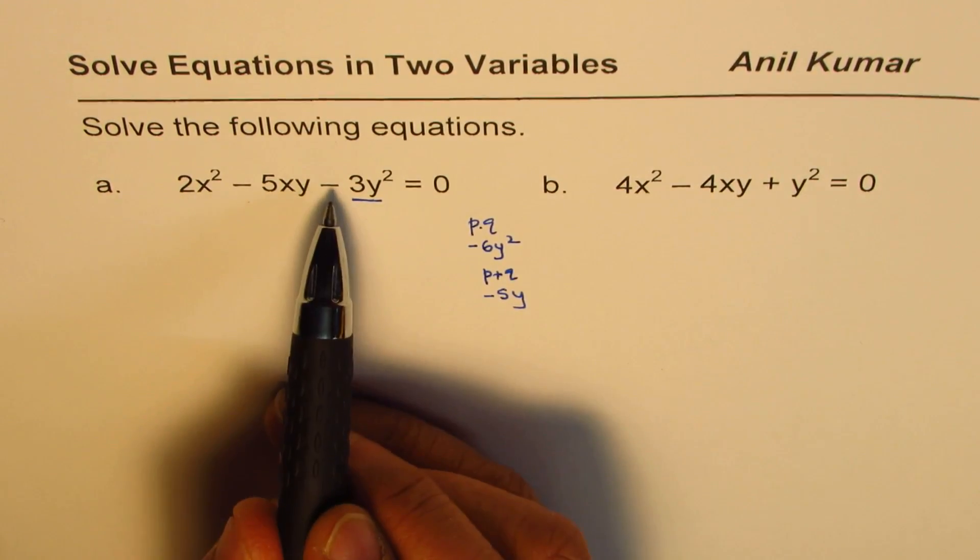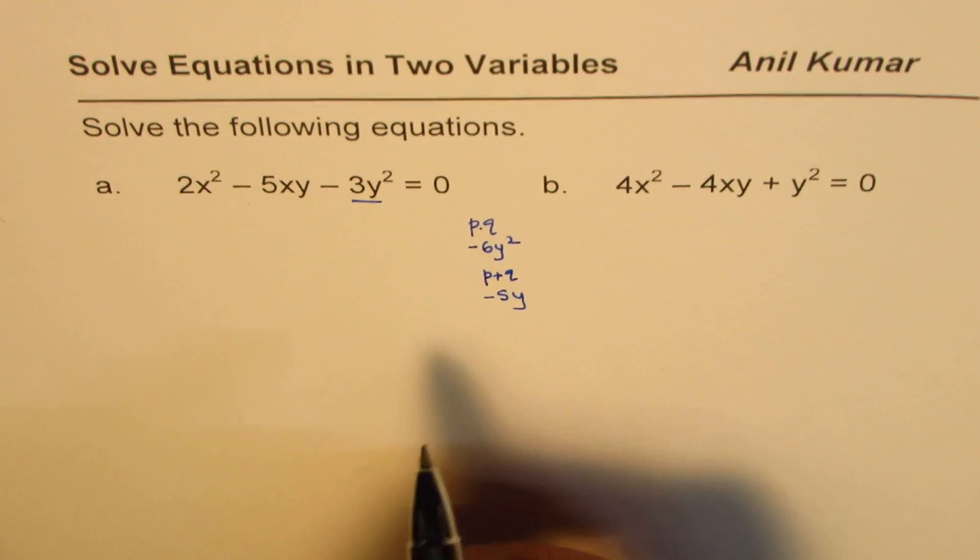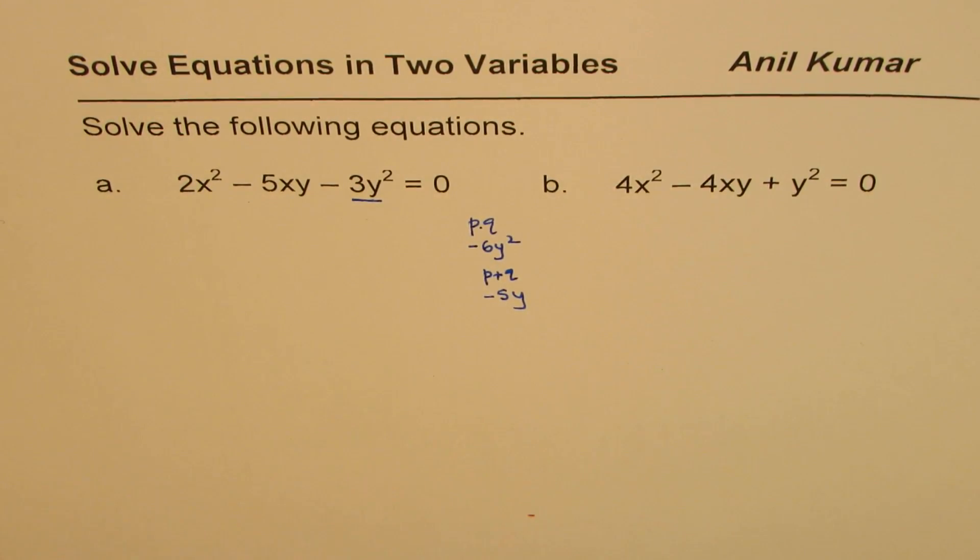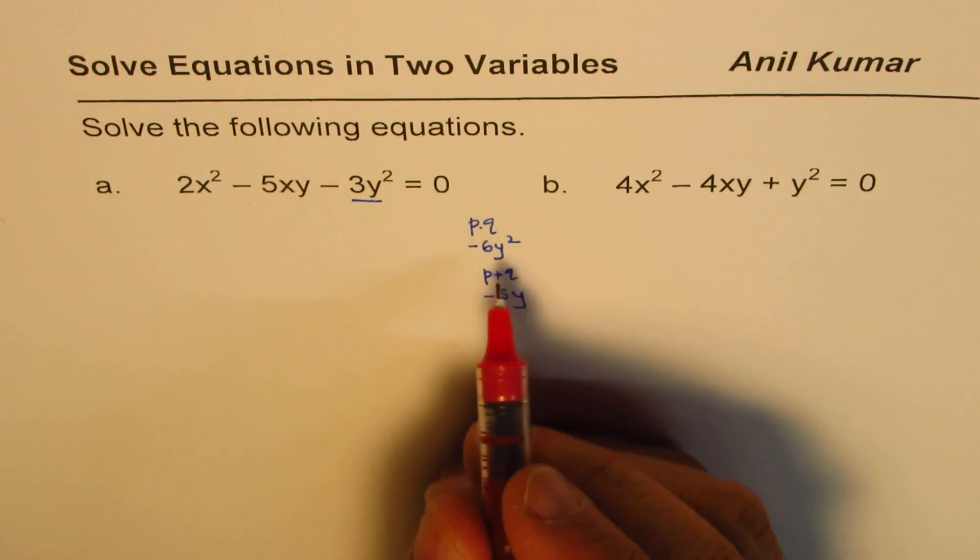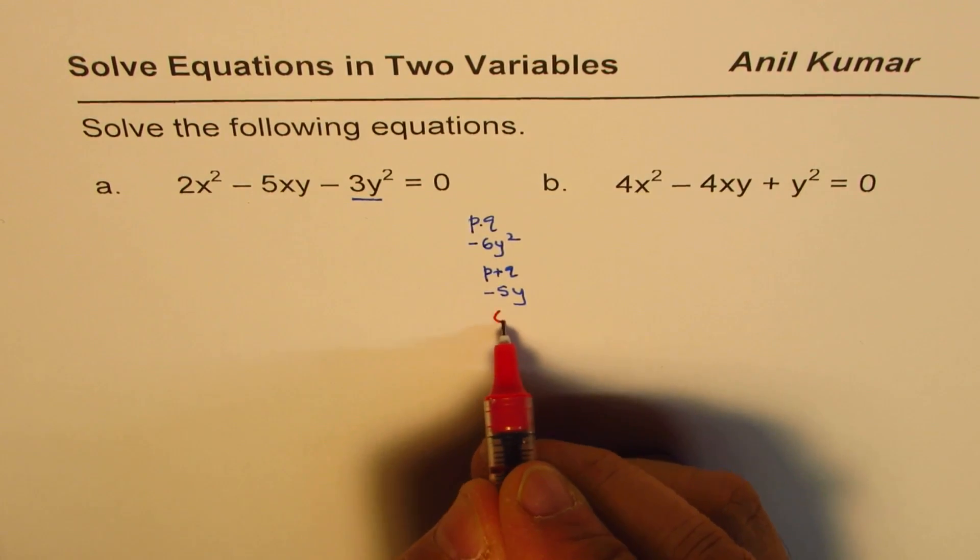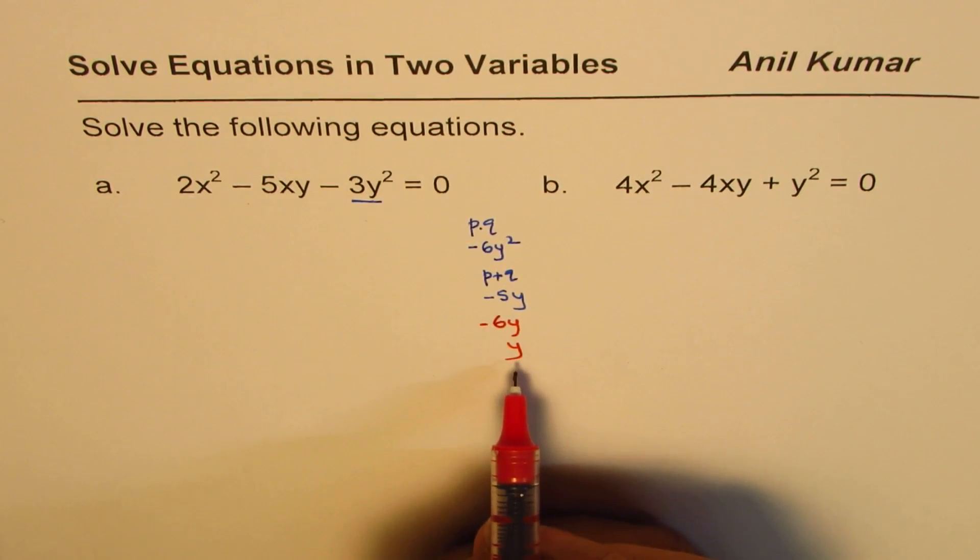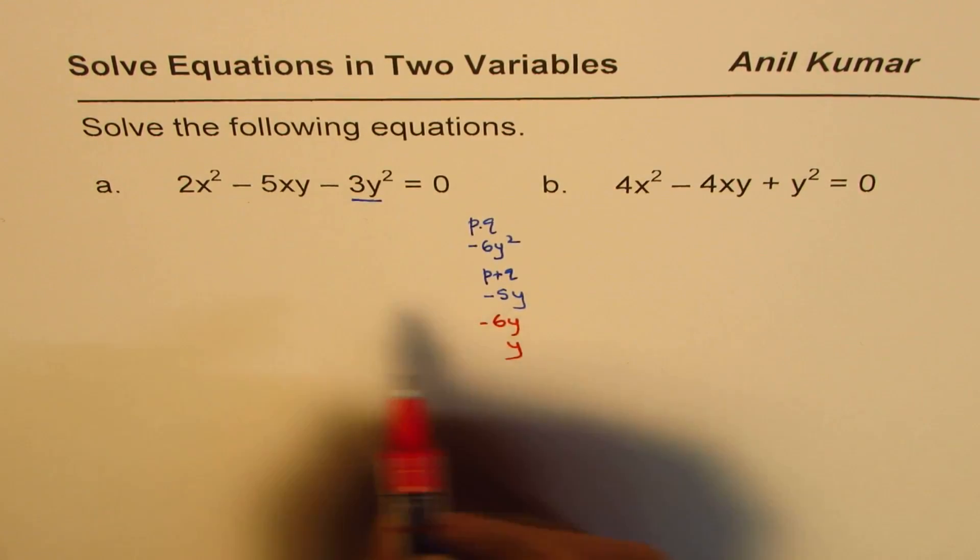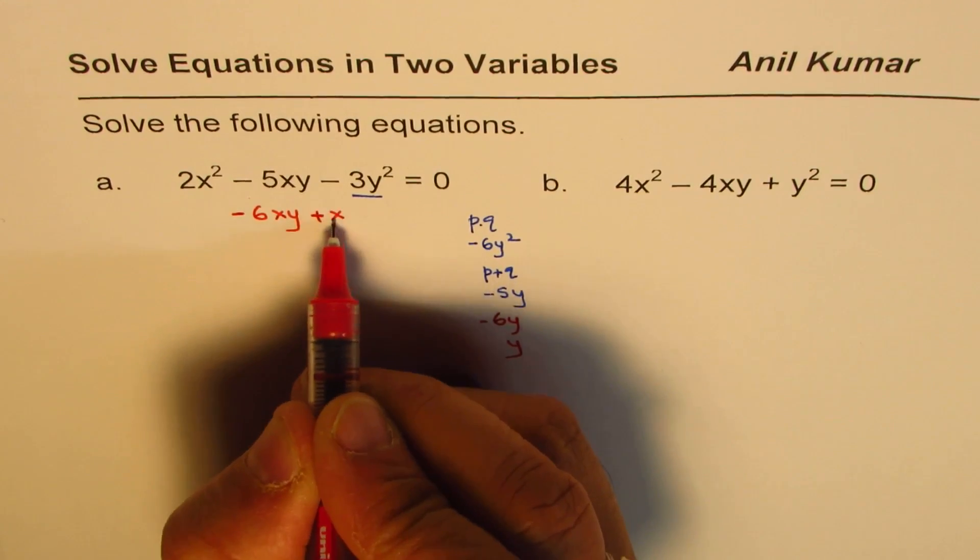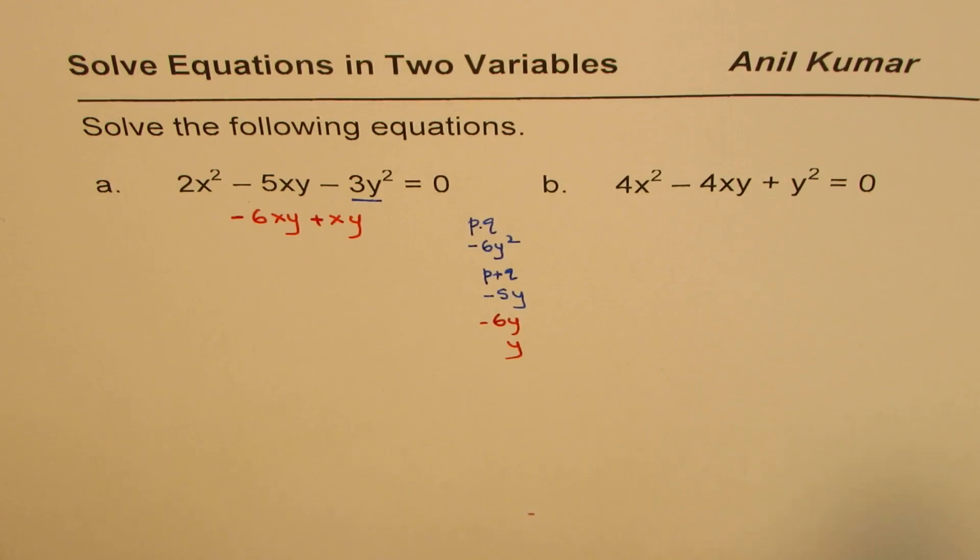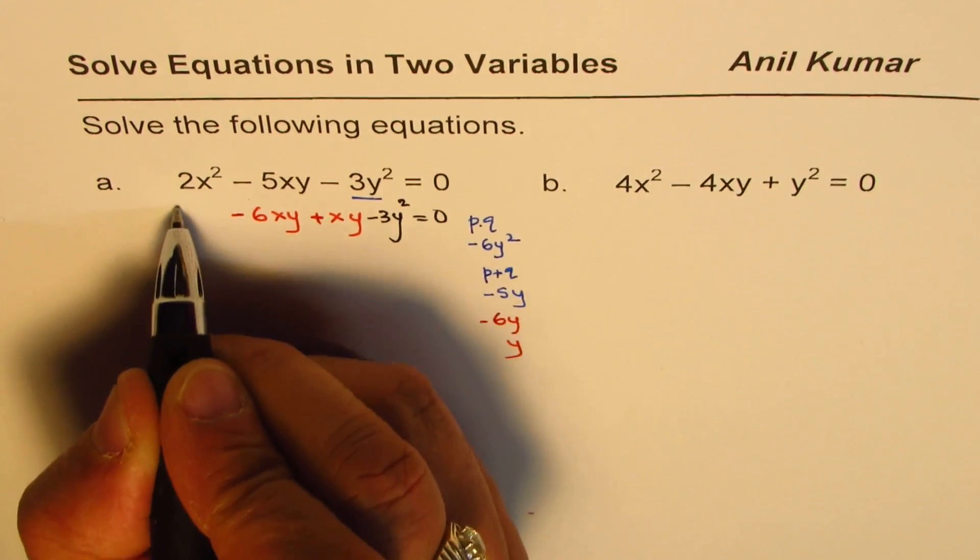So we are looking for product of minus 6y squared and sum of minus 5y. Now what numbers could satisfy this? We know 6 times 1 is 6. We need minus and therefore the two numbers are of opposite sign. So the numbers could be minus 6y and y. So if I add them, I get minus 5y. So we'll split this minus 5xy as minus 6xy and plus xy. The rest of the things are minus 3y squared equals to 0 and we have 2x squared.